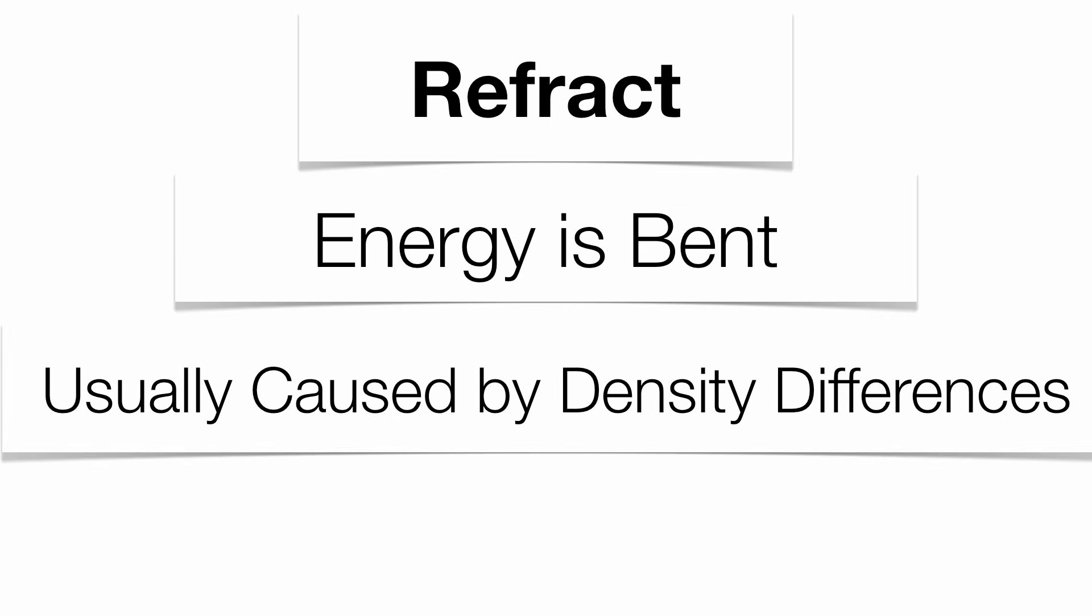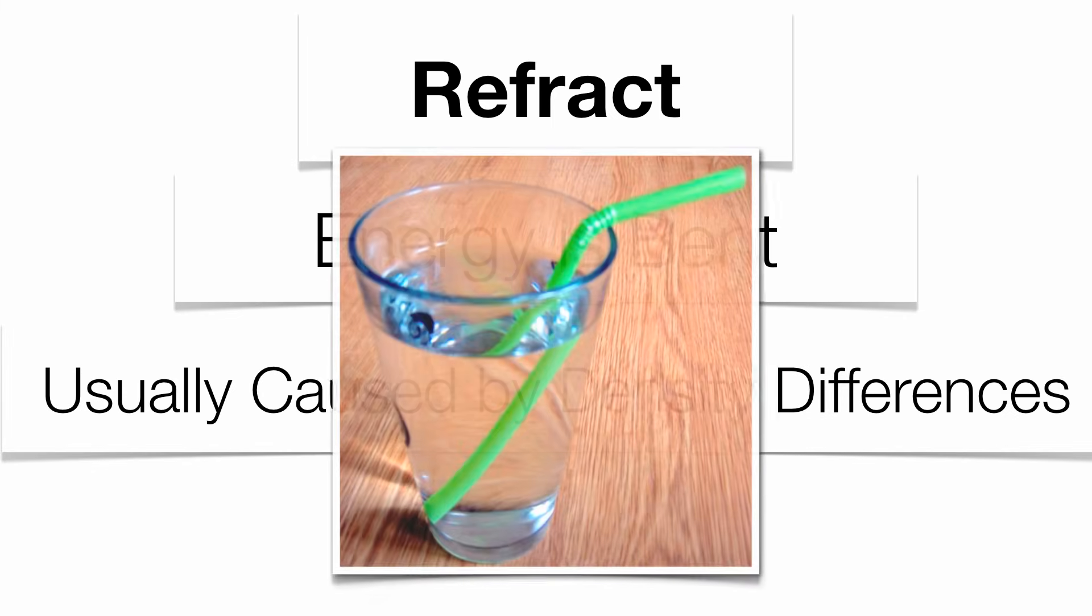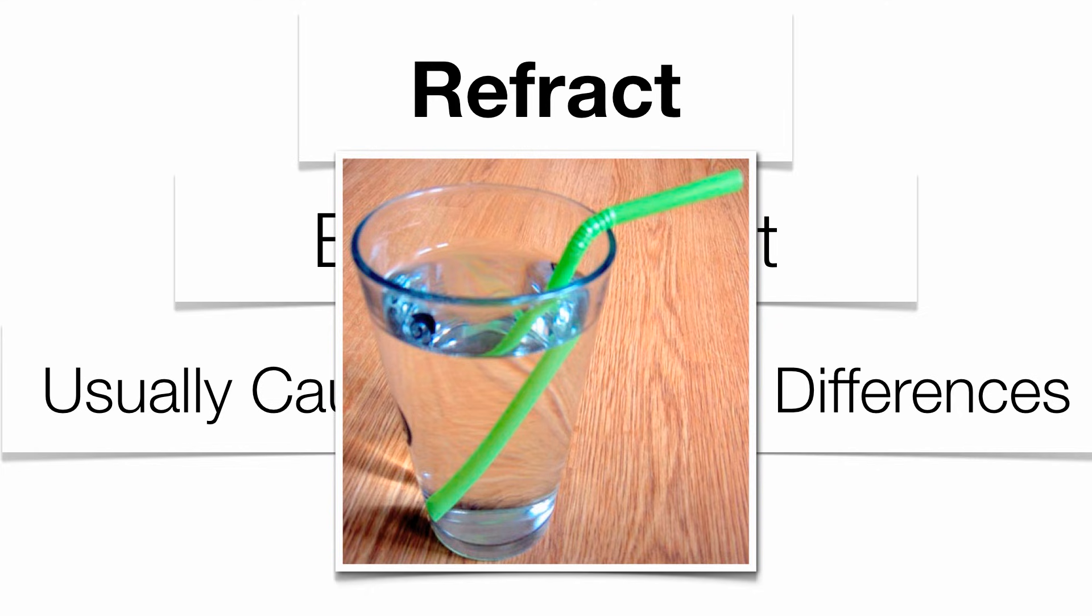Energy can be refracted, which means it can be bent. Usually, this is going to happen with differences in densities. A good example of this is when you put a straw into a glass of water. The glass, the water, and the air all have different densities. So the image of that straw is going to look broken up because the image has traveled through three different densities to get to your eye. It's going to look broken. That's what we call refraction.